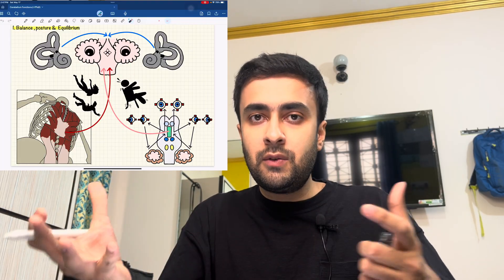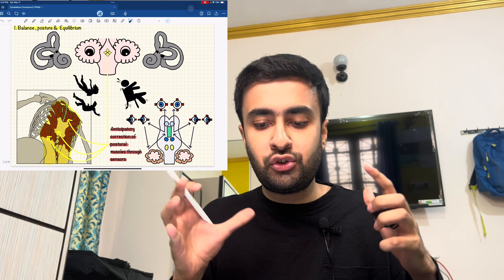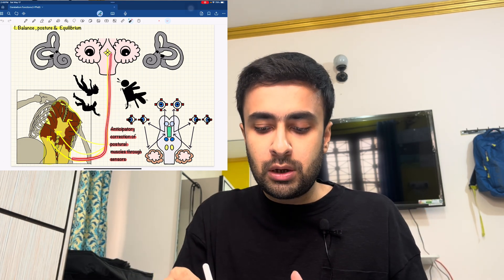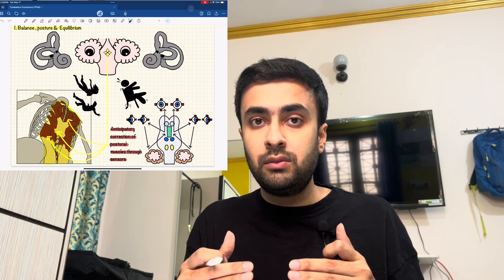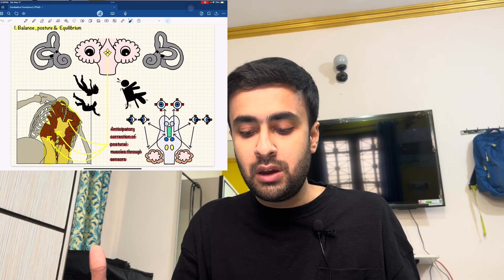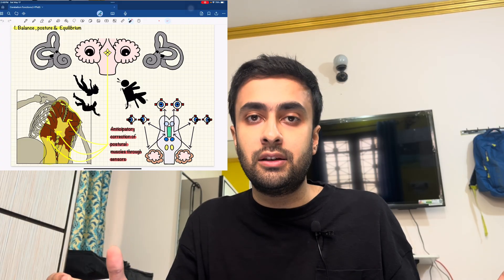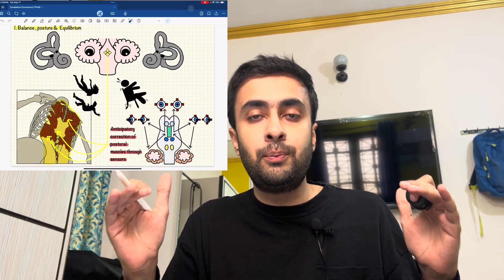How is this response so quick? Because the cerebellum receives stimuli from the vestibular apparatus, from the eyes, and from the muscle itself, and sends a strong excitatory stimulus to the postural muscles. It has anticipated the change in posture and sends a signal that controls the muscles during a change in balance. This is called anticipatory correction of postural muscles through sensors — very efficient, very fast, helping you correct your posture whenever there is a change in inclination or in the horizontal or vertical plane.